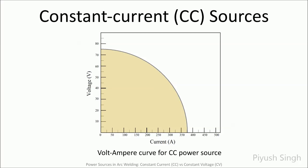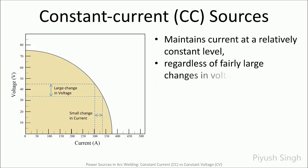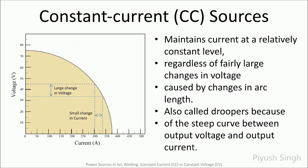Here is the volt-ampere curve for a constant current power source. As discussed earlier, the term 'constant' is relative — the current does not have a constant magnitude, but the change in current is quite small compared to the change in voltage. From the figure, it is clear that for a given change in arc length, there is a significant change in voltage, but the current maintains a relatively constant level. Due to the steep nature of the volt-ampere curve, this kind of power source is also called a 'drooper'.